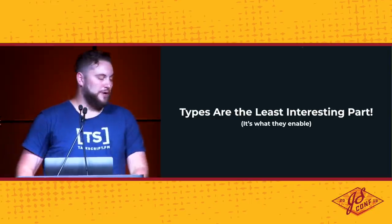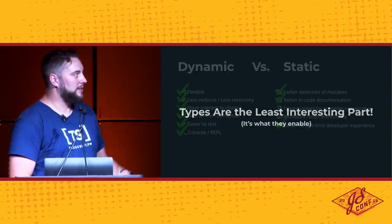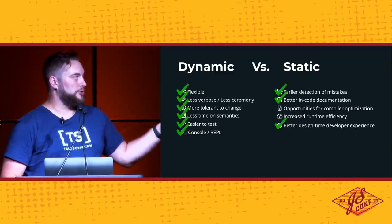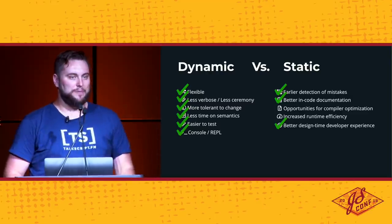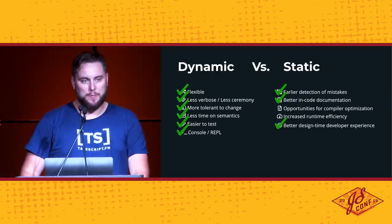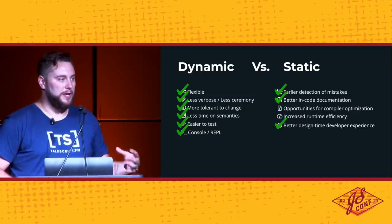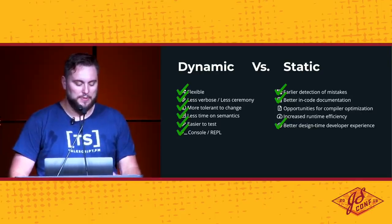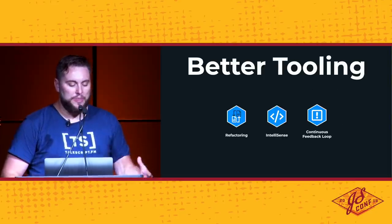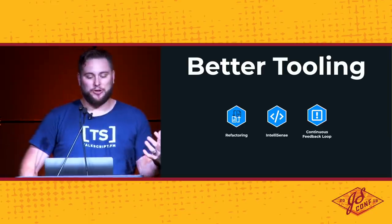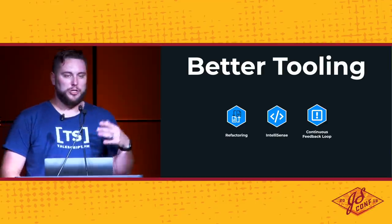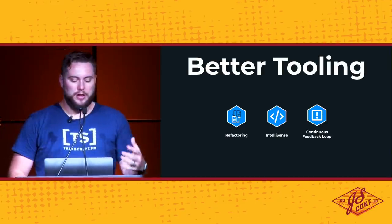The types are really the least interesting part of TypeScript — it's really what they enable. We get a lot of the static language benefits with all the advantages of JavaScript. We get a compile step for earlier detection of mistakes in real time. We get better built-in documentation because we can annotate our code with types so we know exactly what method signatures look like, and we can't really call methods in an incorrect way. And we get a better design-time developer experience through the language server — with IntelliSense, accurate auto-completion, and a continuous feedback loop.